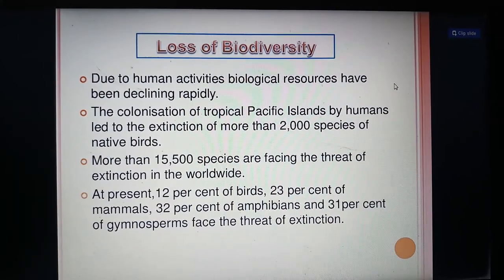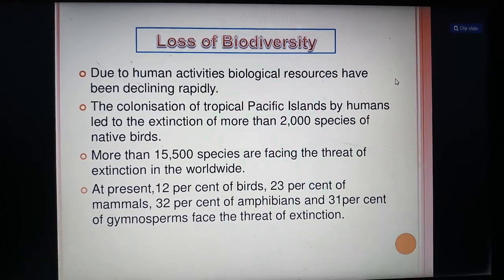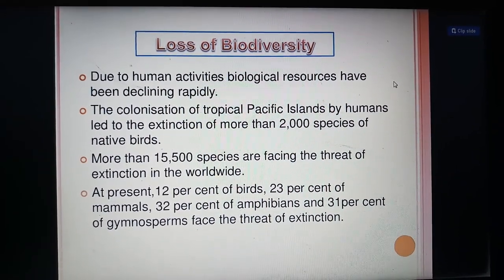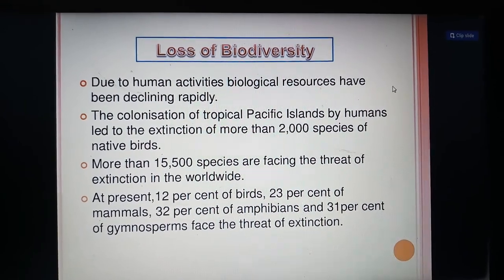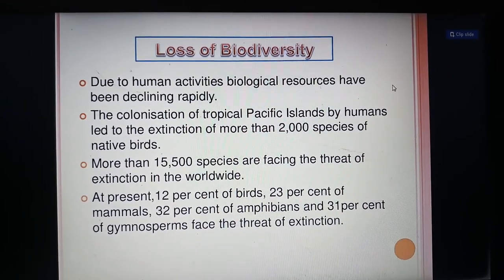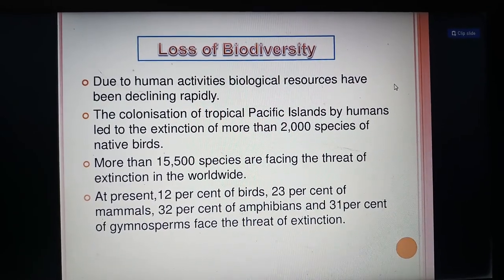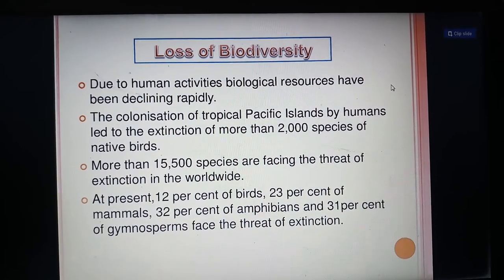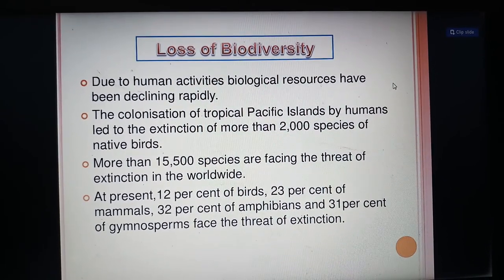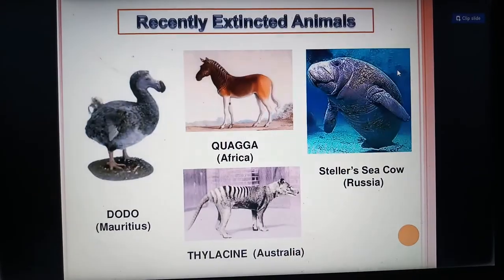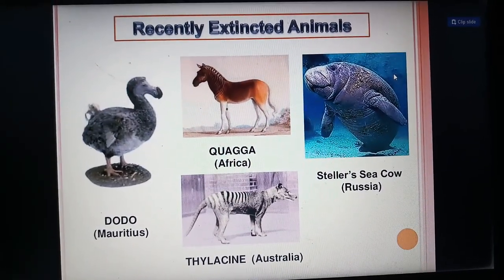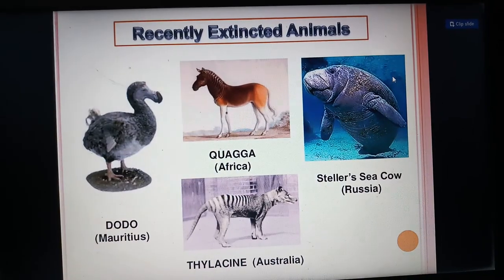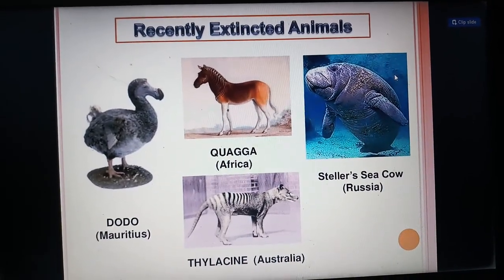Loss of biodiversity: due to human activities, biological resources have been declining rapidly. The colonization of tropical Pacific islands by humans led to the extinction of more than 2,000 species of native birds. More than 15,500 species are facing the threat of extinction worldwide. At present, 12% of birds, 23% of mammals, 32% of amphibians, and 31% of gymnosperms face the threat of extinction. Recently extinct animals include the dodo in Mauritius, quagga in Africa, Steller's sea cow in Russia, and the thylacine (Tasmanian tiger) in Australia.